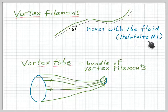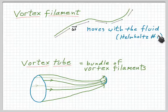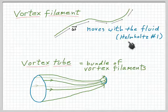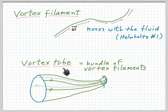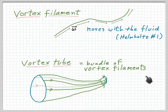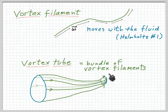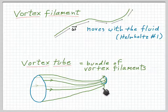Helmholtz's first theorem showed us that a vortex filament moves with the fluid. In other words, a vortex filament may twist and turn and change its shape as it moves with the flow, but it's always made up of the same fluid molecules. A vortex tube is a bundle of vortex filaments — sort of like a vortex filament with non-zero thickness. This is a depiction of a vortex tube, where each of the green arrows is a vortex filament.